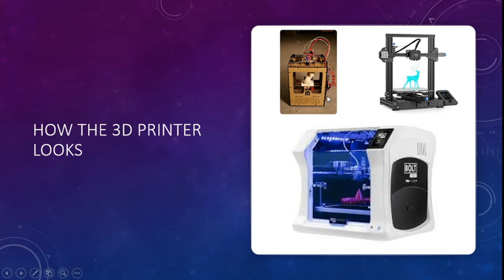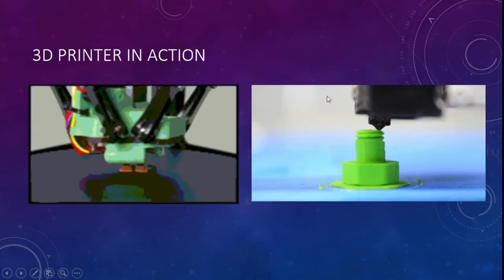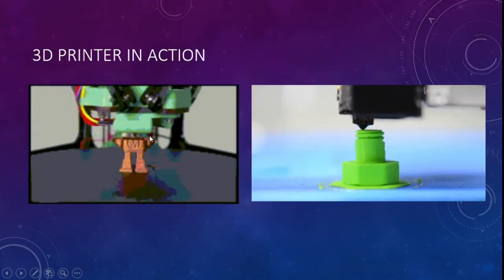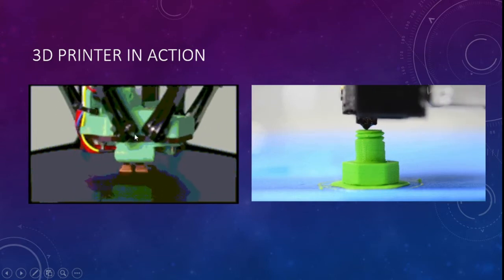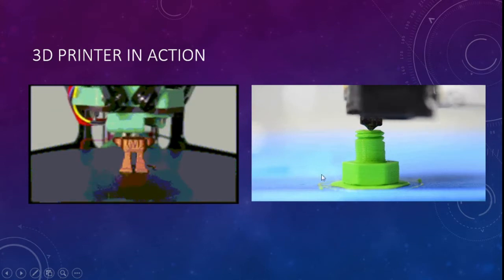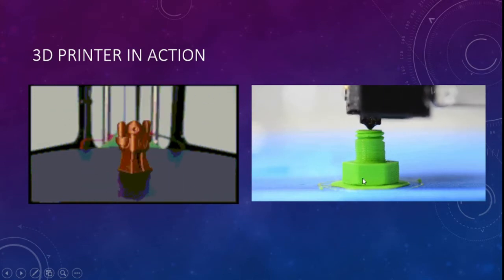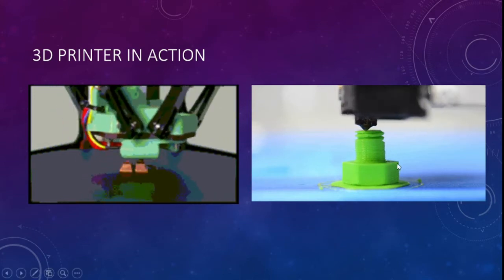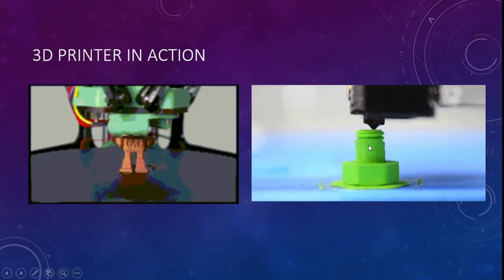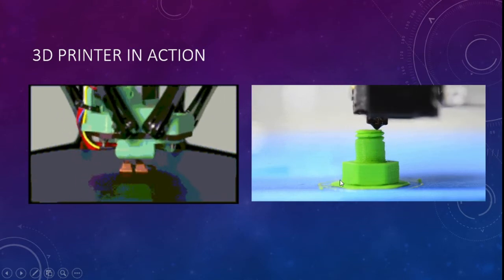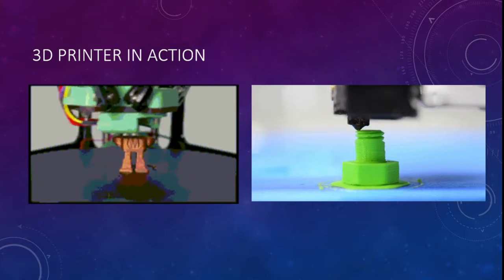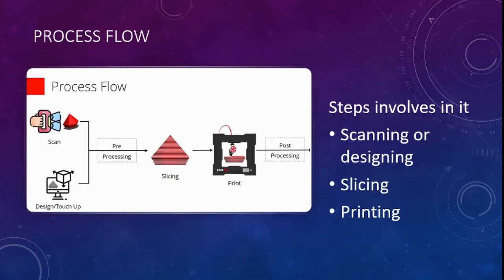The 3D printer works by designing the object from the base upward. As previously mentioned, it is an additive process — the nozzle moves continuously in a to-and-fro, circular manner to build up the object layer by layer.